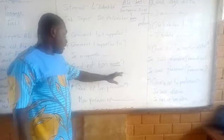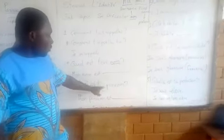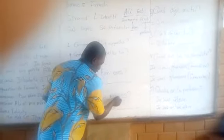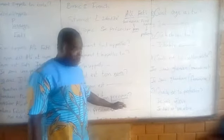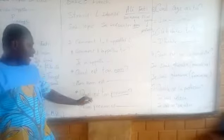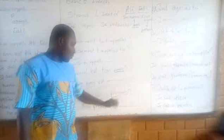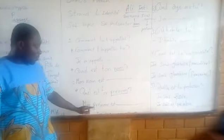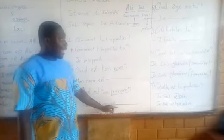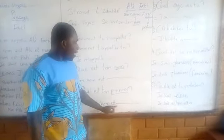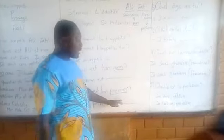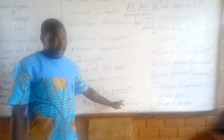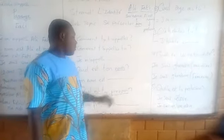'Quel est ton prénom?' Here the main focus is 'prénom.' The answer is 'Mon prénom est...' — and we take Fati. So 'Mon prénom est Fati.' But the 'nom' is Ali. Okay.